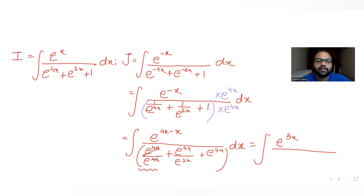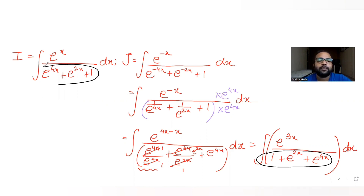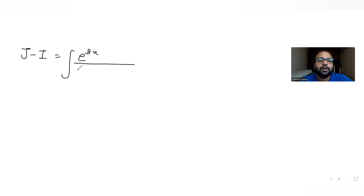The denominator simplifies: the 1 upon e raised to 4x cancels out, and we are left with e raised to 2x and e raised to 4x. So J simplifies to integral of e raised to 3x upon (e raised to 4x plus e raised to 2x plus 1) dx. Now I can see both I and J have the same denominator: e raised to 4x plus e raised to 2x plus 1.